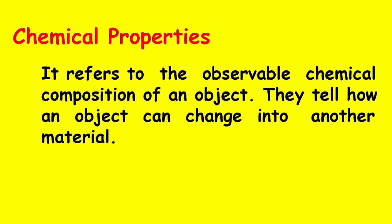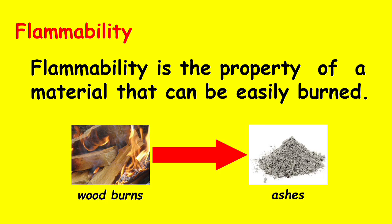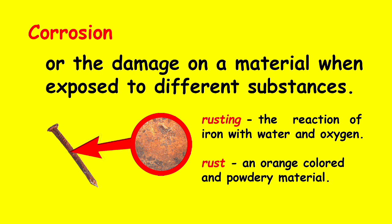Next are chemical properties. Chemical properties refer to the observable chemical composition of an object and tell how an object can change into another material. One chemical property is flammability, which is the property of a material that can easily be burned. For example, when wood burns, it will turn into ashes. Another chemical property is corrosion, or the damage on a material when exposed to different substances. An example is rust — the reaction of iron with water and oxygen — producing an orange-colored and powdery material on the nail.